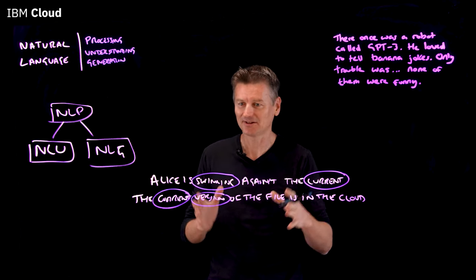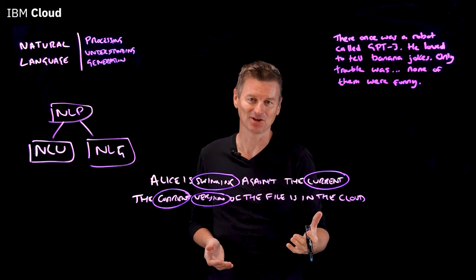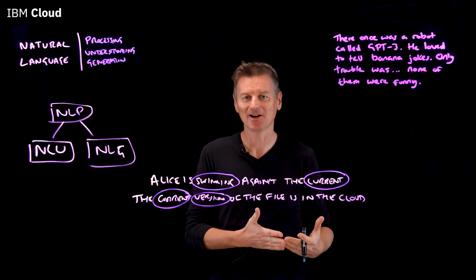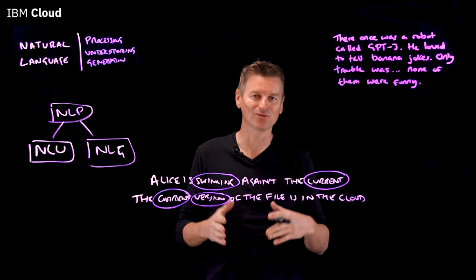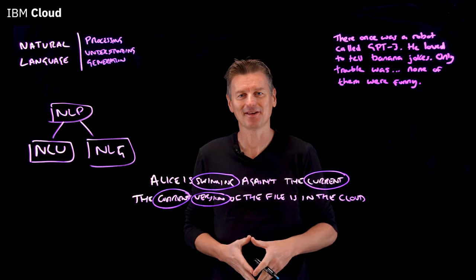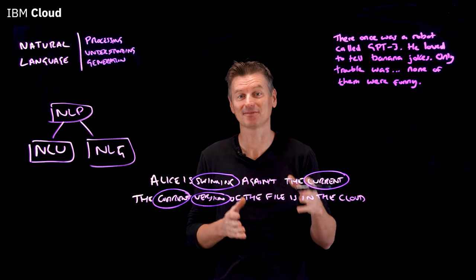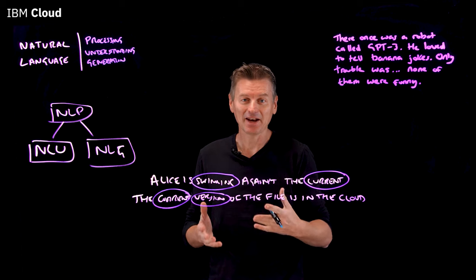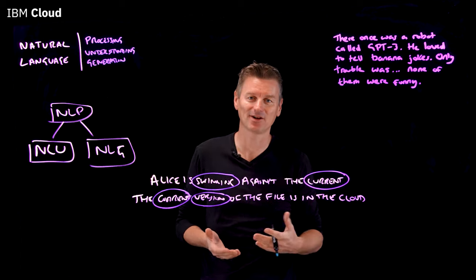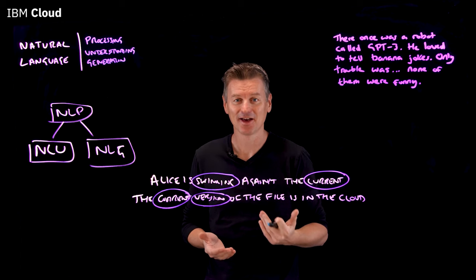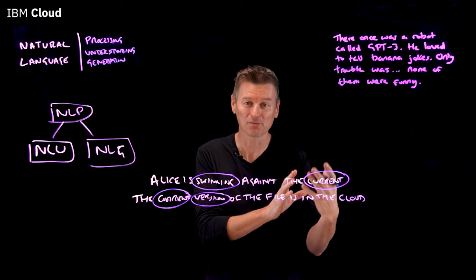While NLU is all about improving a computer's reading comprehension, NLG — natural language generation — focuses on enabling computers to write. It's the process of producing a human language text response based on some data input. NLG applications need to consider language rules based on morphology, lexicons, syntax, and semantics to make choices on how to phrase responses appropriately.